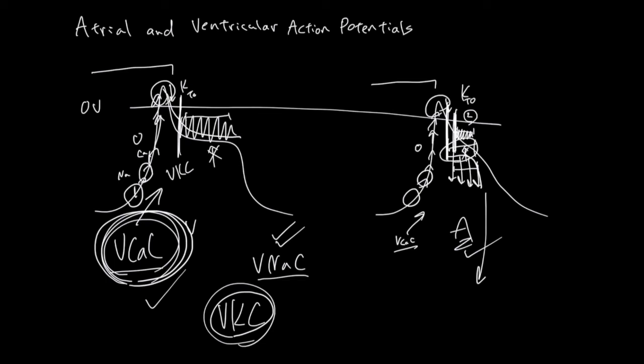So in summary, in ventricle, here Na channel opens, things start to come in, more positive. Calcium channel opens a little bit after. And it takes time for the calcium channel to close. And there is going to be more positive influence because of this large amount of calcium channel that's going to be open for a while. Also, a little bit later than this dip, the delayed rectifiers open, and they will start to drive down this action potential.